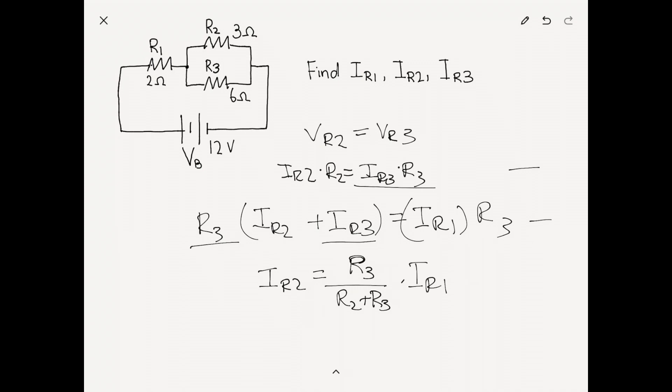And if we plug in the values, we already know the current at R1 is 3 amps, so we get current at R2 is 2 amps when we substitute.